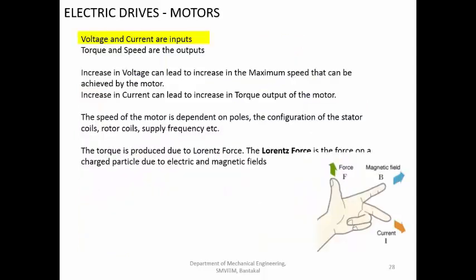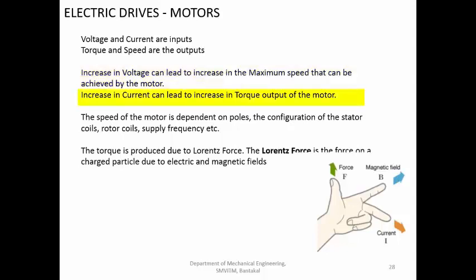The inputs to the electric motor are voltage and current. The outputs are torque and speed. If you increase the voltage, the maximum speed the motor can reach will increase — for example, at 120 volts the motor may reach 1000 RPM, and at 240 volts it may reach 2000 RPM. If you increase the current, the Lorentz force increases, and therefore the torque output also increases. So to increase the speed range, increase the voltage; to carry more load or apply more torque, control the current.